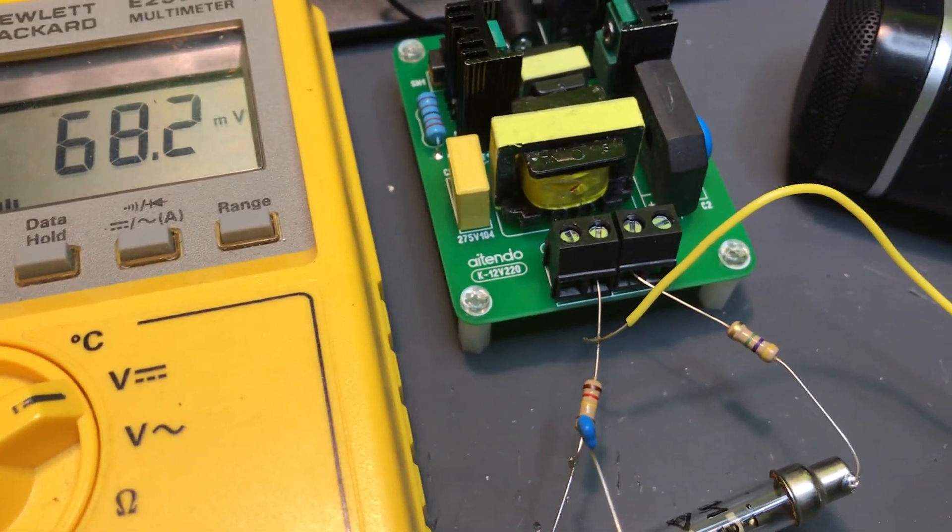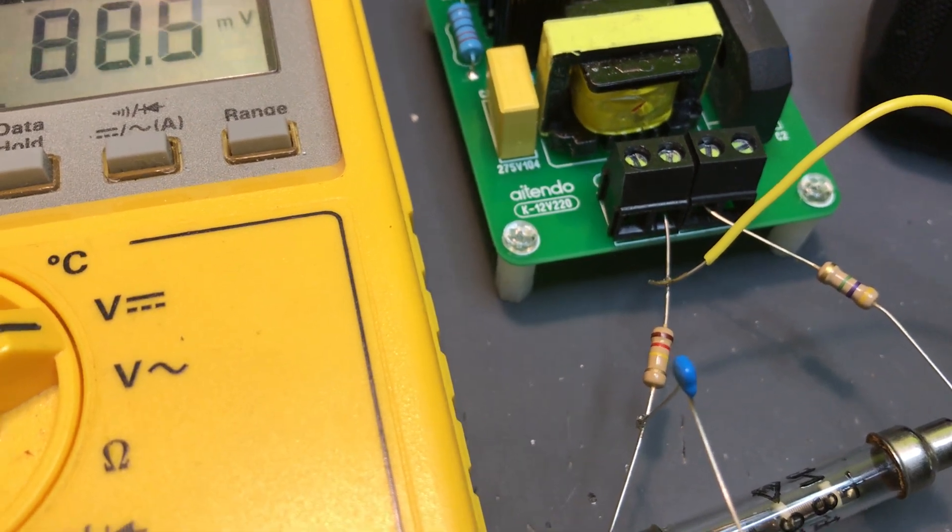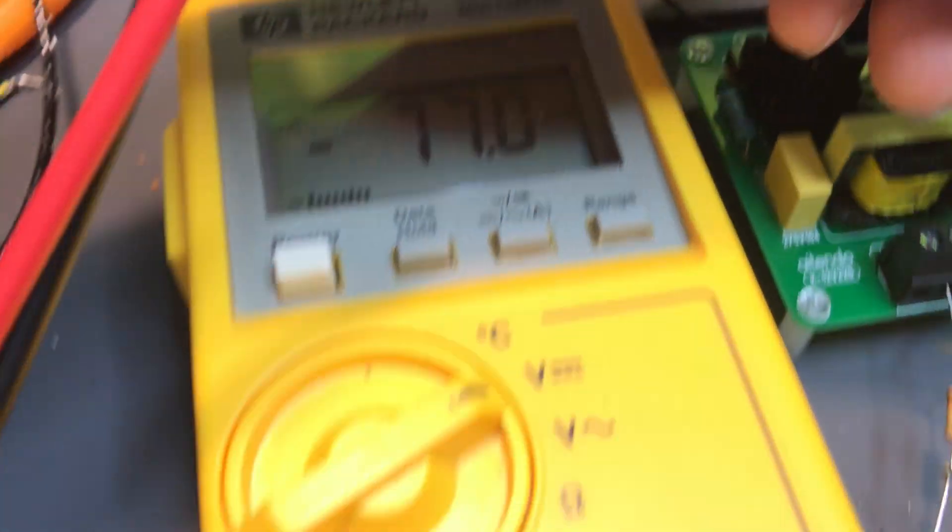So this time I use a parts kit which is sold at Akihabara, Tokyo, which can generate around 400 volts. Let's measure the current voltage.